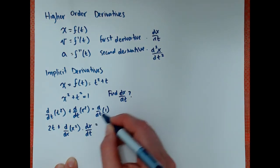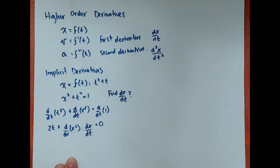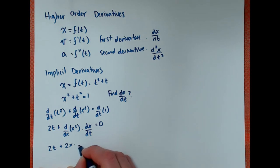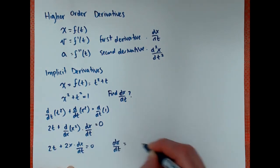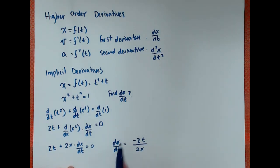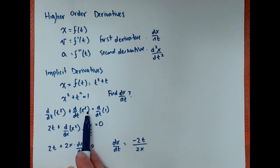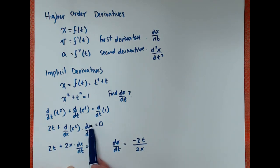We've now solved for how x is changing with respect to time, even though we couldn't put it into the easy standard form. The real trick with implicit derivatives is understanding that even though we can't see t explicitly in x, we can't assume x is not changing with time. So we use the chain rule — take the derivative of x with respect to itself first, then multiply by dx over dt.